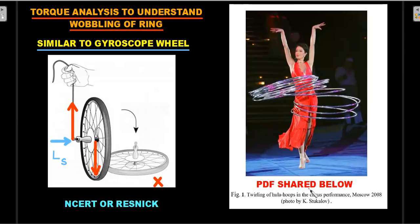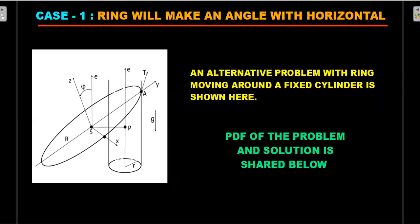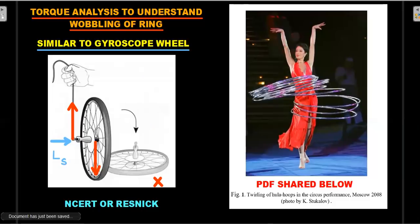Two PDFs are shared in the description: one for the cylinder-and-ring experiment (case one), and one for the wobbling or gyroscopic effects (case two). Both will be revisited when we do a future video on Euler's equations.